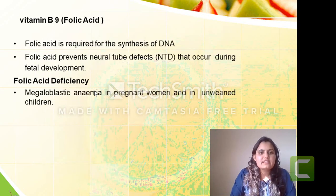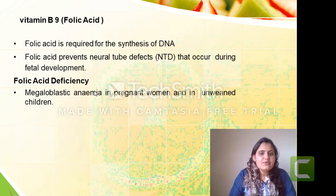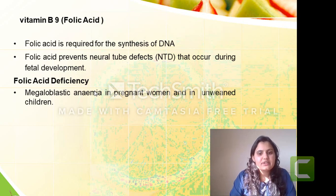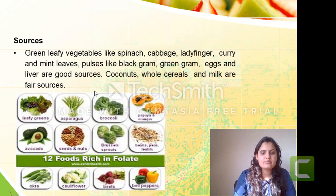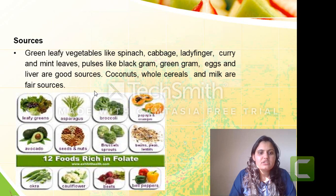Vitamin B9, another name is folic acid. It is mainly required for synthesis of DNA and it prevents neural tube defects that mainly occur during fetal development. If there is deficiency of folic acid, it will lead to megaloblastic anemia, mainly in pregnant women or weaned children. Sources are green leafy vegetables — whether it is spinach, cabbage, ladyfinger, mint leaves, or pulses like black gram, green gram, etc.